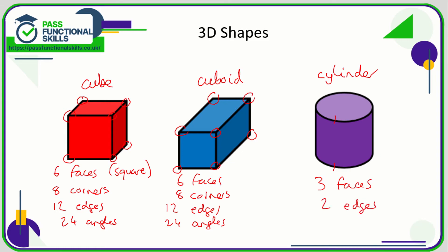A cylinder also has zero angles. Another key feature of the cylinder is that if you rip a toilet roll down the center and lay it out flat, it turns into a rectangle.